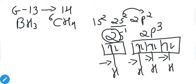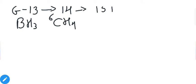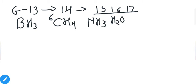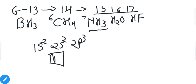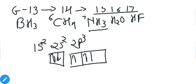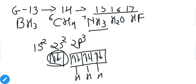Moving from group 14 to groups 15, 16, and 17, all these groups form electron rich hydrides. Group 15 forms NH₃, group 16 forms H₂O, and group 17 forms HF. Let's start with ammonia. Nitrogen has atomic number 7, so its electronic configuration is 1s² 2s² 2p³ — one pair in 2s and three single electrons in 2p. Three hydrogens share one electron each with these single electrons of nitrogen, completing the octet of nitrogen.